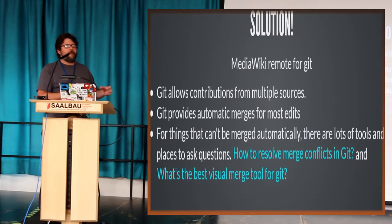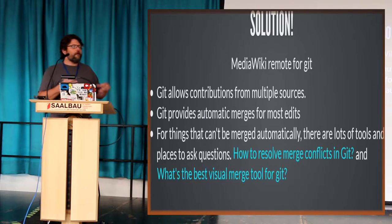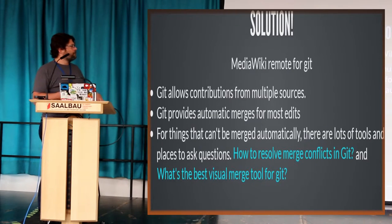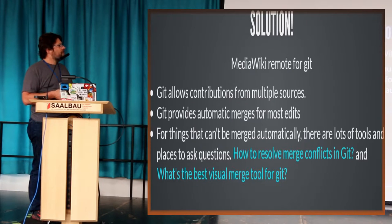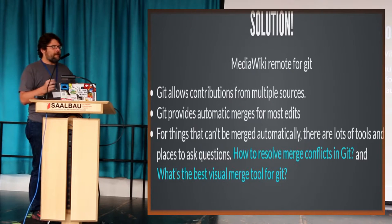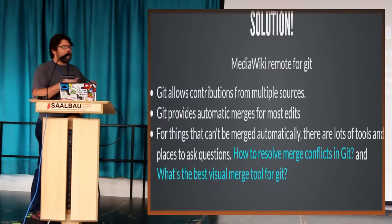It hasn't been updated in a long time. I've been talking with Lex about this over time — we both wanted to try it — and finally at Wikimania I got the time to sit down and really bang something out, and fix some of the bugs I found. Git allows contributions from multiple sources, it automatically performs merges, and for things that can't be merged, there are tools available to help you with that.